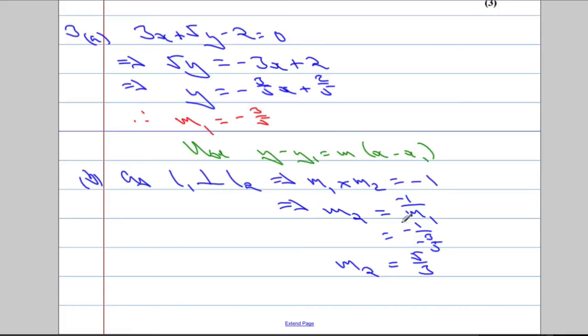Okay, got the gradient. I've got the point 3, 1. So, L2: y minus 1 equals m2, which is 5 over 3, times x minus 3.